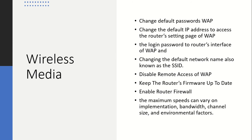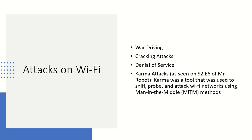Different attacks can be carried out on Wi-Fi networks. Wardriving involves using someone else's Wi-Fi or internet services without their knowledge — for example, guessing a weak password and using their connection illegally. Other attacks include cracking passwords, denial of service, and karma attacks. Karma was a tool used to sniff, probe, and attack Wi-Fi networks using a man-in-the-middle method.